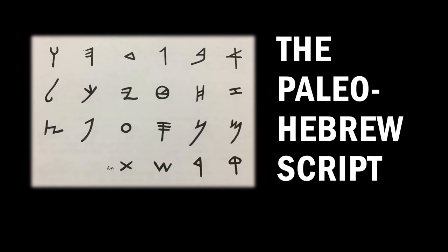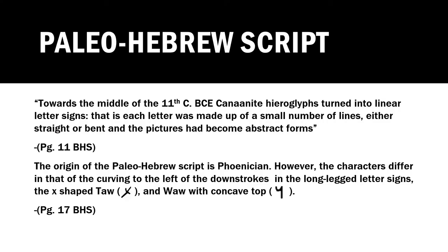Let's look at the Paleo-Hebrew script more in depth. Towards the middle of the 11th century BC, Canaanite hieroglyphs turned into linear letter signs — each letter made up of a small number of straight or bent lines, with the pictures becoming abstract forms. The origin of the Paleo-Hebrew script is Phoenician; however, the characters differ in their curving to the left of the downstrokes, the long-legged letter signs, the X-shaped tops, and the vav with the concave top.